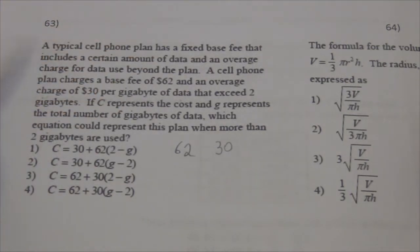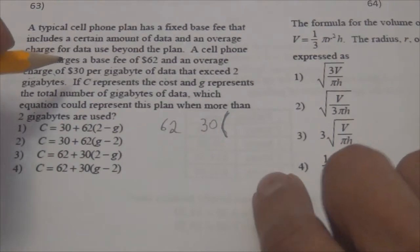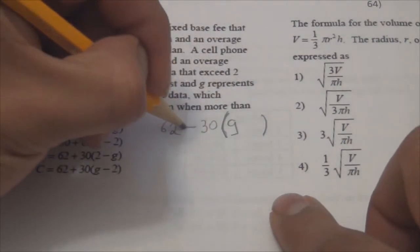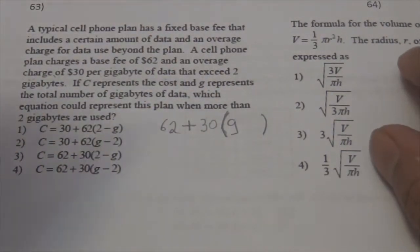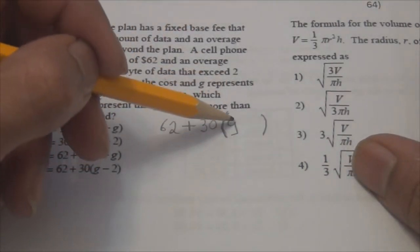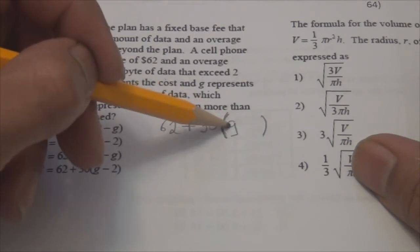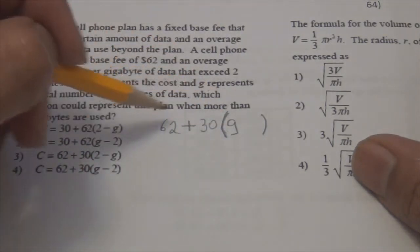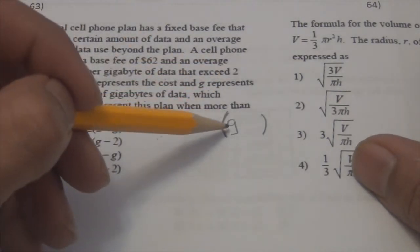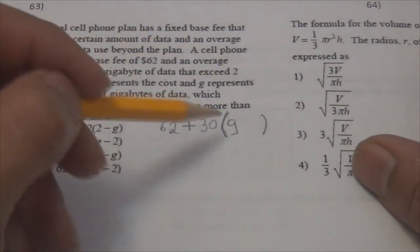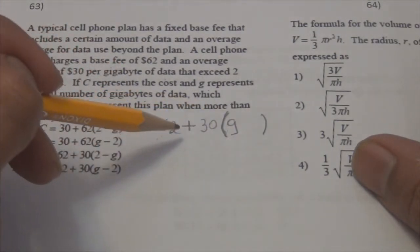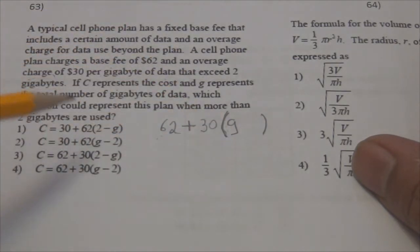Let's pretend more than 2 gigabytes are used. I need to find an amount of gigabytes. If I use 0 gigabytes, I'm going to pay $62 because that's a fixed plan. If I use 1 gigabyte, I will have to pay $30 — 1 times 30 is 30 — so I'd end up paying $92. But it says I should exceed 2 gigabytes, so this doesn't make sense.